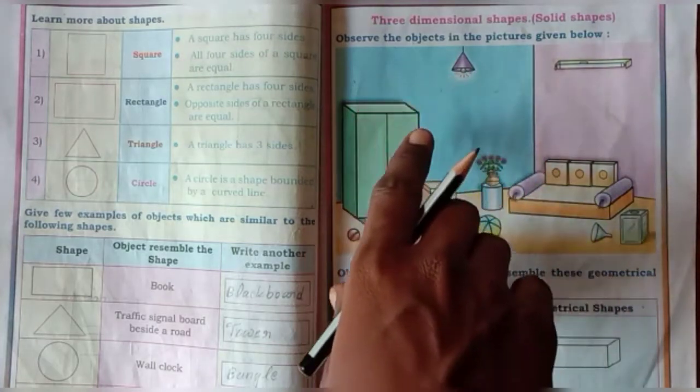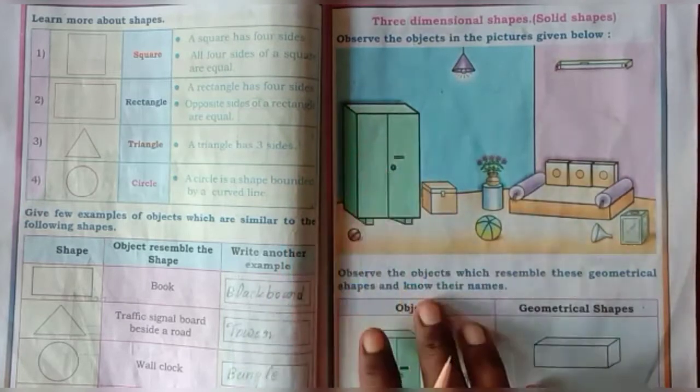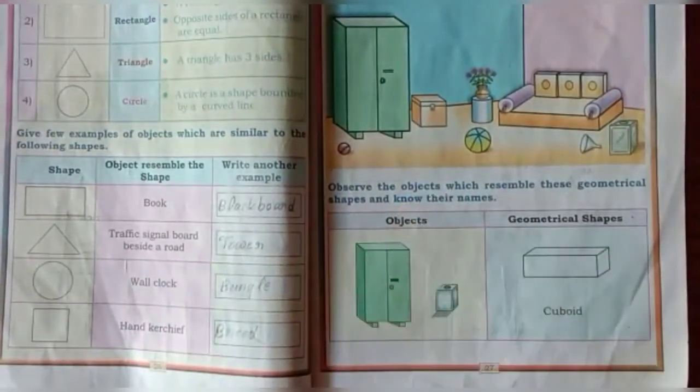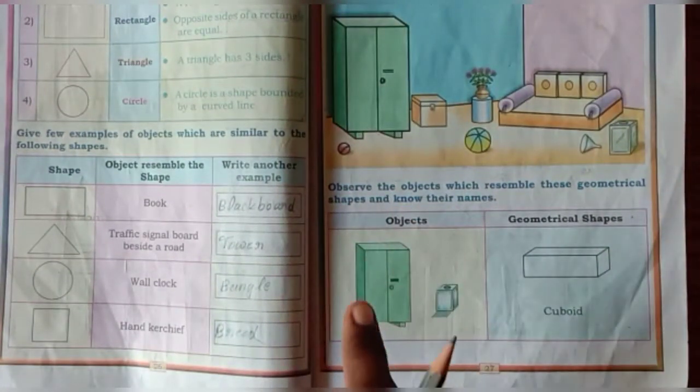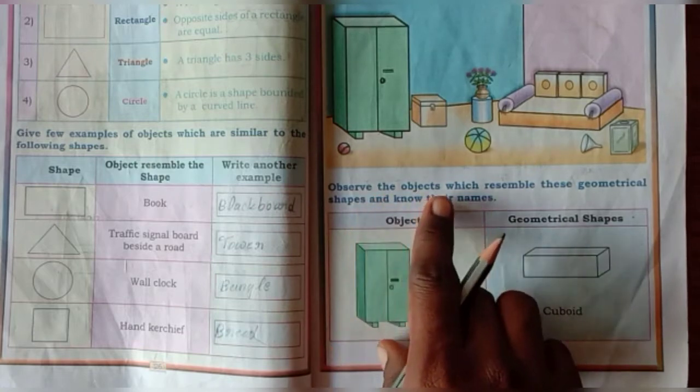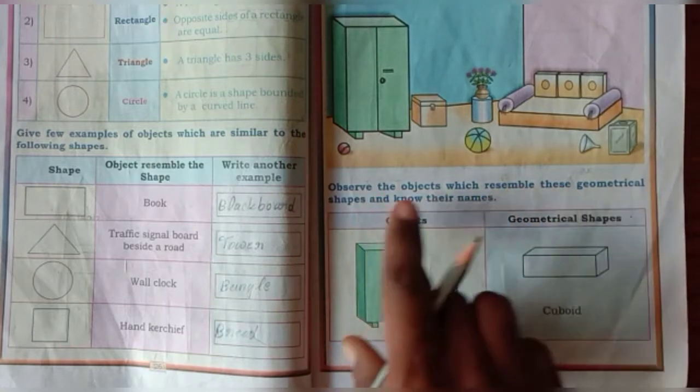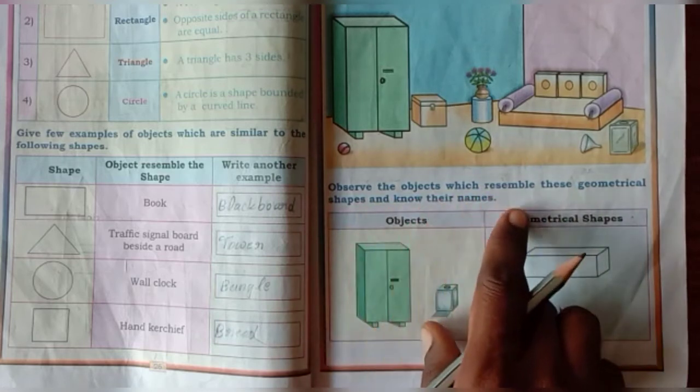Here you can see so many objects are there. Next, observe the objects which resemble these geometrical shapes and know their names.